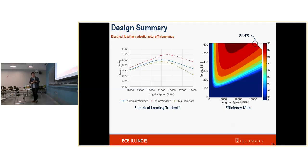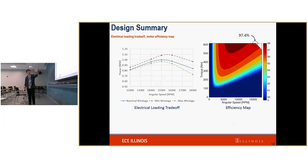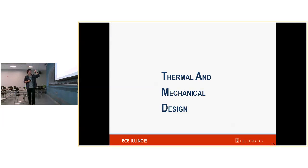The efficiency map shows the motor's efficiency at different operating points. From zero to nominal speed of 15,000 RPM, we have linearly increasing power and constant torque. Above 15,000 RPM we enter the constant power region. This shows that our 97.4% efficiency at the nominal operating point sits right at the knee of the curve.